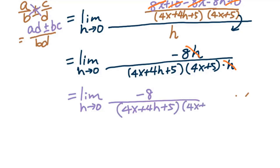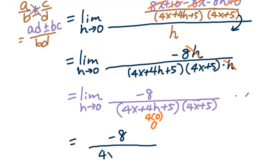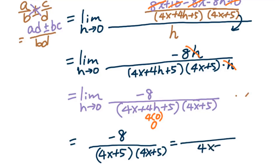After reducing h, we get the limit as h approaches 0 of -8 over [(4x + 4h + 5)(4x + 5)]. Applying the limit by plugging h = 0, the 4h becomes 0, leaving -8 over (4x + 5)(4x + 5), which is -8 over (4x + 5)². This is the derivative for this rational function.